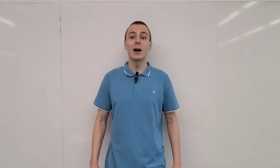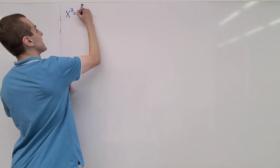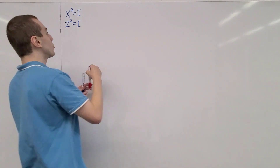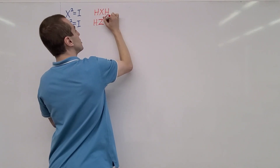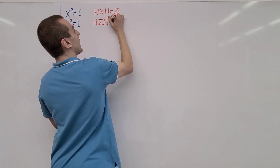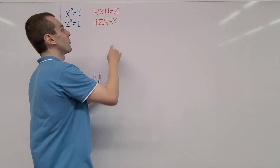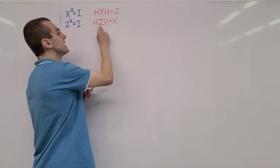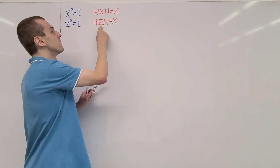In previous videos in the quantum mechanics playlist, we saw the Pauli X and the Pauli Z gates. If you take the square of X, this is equivalent to the identity. If you take the square of Z, this is also equivalent to the identity. If you sandwich X and Z between two Hadamard gates, this is going to produce Z over here and X over here. So the Hadamard gate allows us to translate between the eigenbasis of Pauli Z and the eigenbasis of Pauli X. We are moving between the language of phase flips and bit flips. So Pauli X can be thought of as a bit flip and Pauli Z can be thought of as a phase flip.